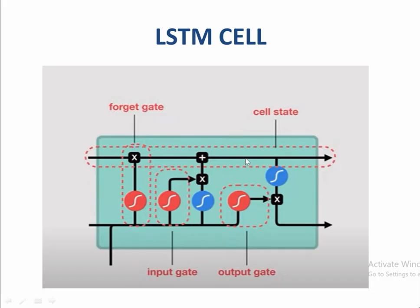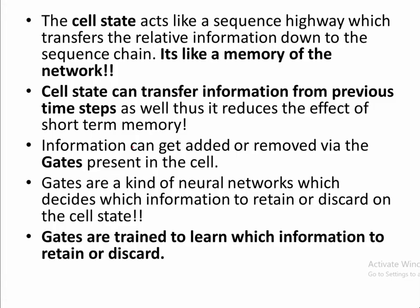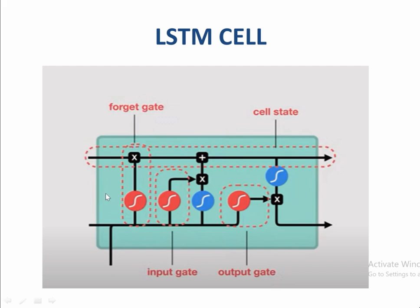There is a cell state and three gates: input gate, forget gate, and output gate, along with suitable activation functions. The cell state is a sequence highway — it forms a memory for the network, helping to transfer information from previous time steps, reducing the effect of short-term memory. Information can be added to or removed from it through the gates. Gates are themselves neural networks trained to decide which information to retain or discard.